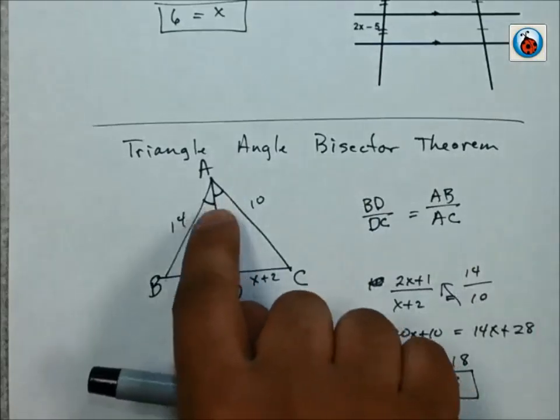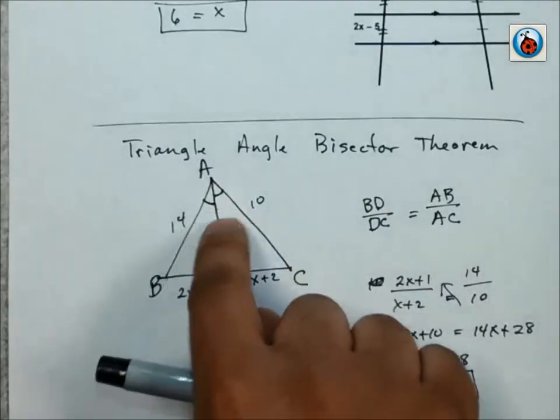So that's how you would use this Triangle Angle Bisector Theorem. Again, that depends on whether or not this segment right here bisects the angles.